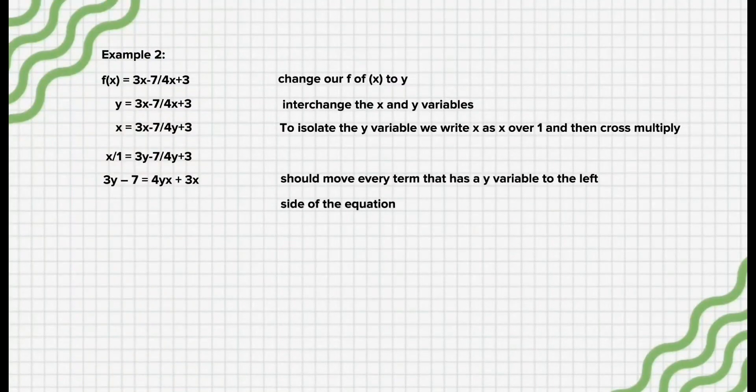So, at this point, in order to isolate the y variable, we should move every term that has a y variable to the left side of the equation. So, now we have 3y - 4yx = 3x + 7.